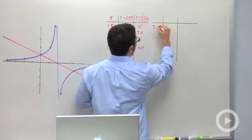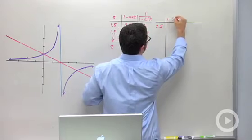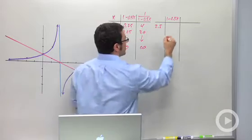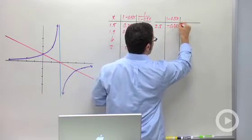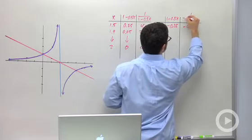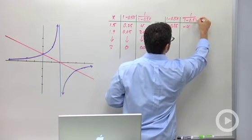2.5. Half of that is 1.25. 1 minus 1.25 is negative 0.25. And the reciprocal of that's negative 4. So this is 1 over 1 minus 0.5x.